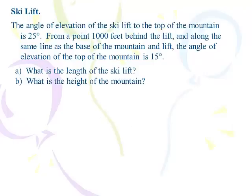So, let's look at a ski lift problem. The angle of elevation of a ski lift to the top of a mountain is 25 degrees. From a point 1,000 feet behind the lift and along the same line as the base of the mountain to lift, the angle of elevation at the top of the mountain is 15 degrees. What's the height, what's the length of the ski lift, and what's the height of the mountain?